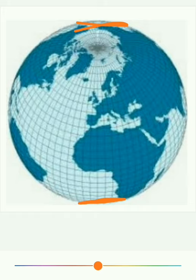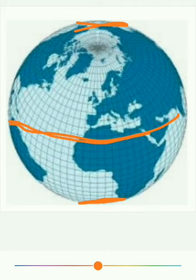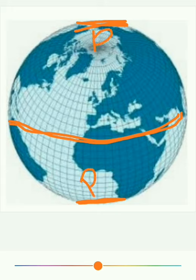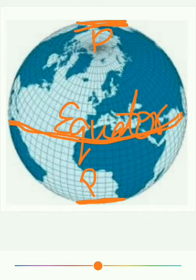Bulging at the equator means — see, observe this part students. Here is a bulging. The Earth is bulging at the equator. The poles are flattened. This we call the poles. At the center part we say that it is the equator. At the equator part the Earth is bulging.